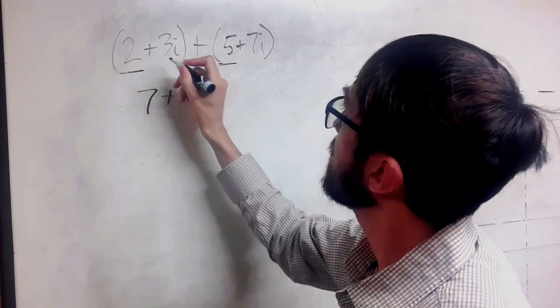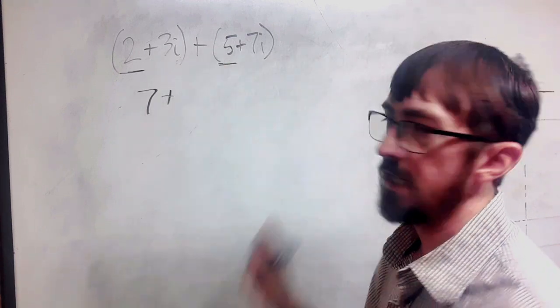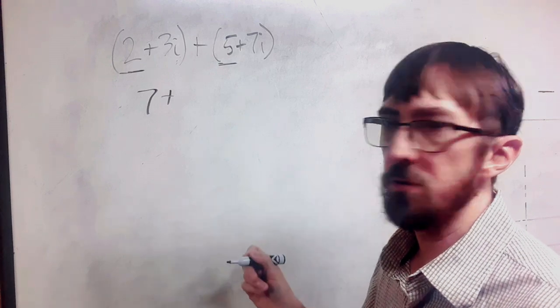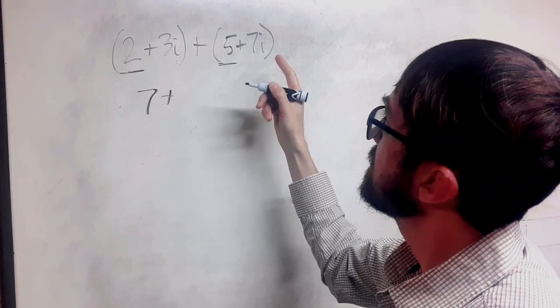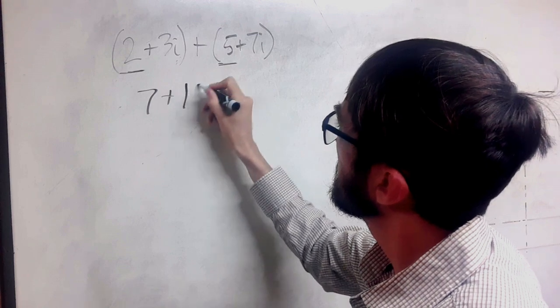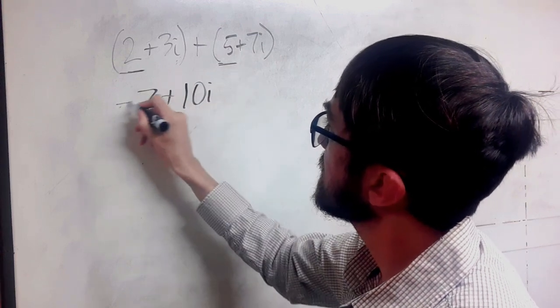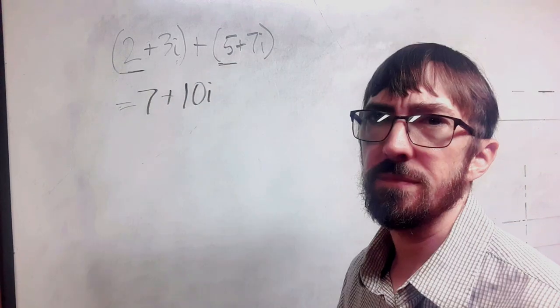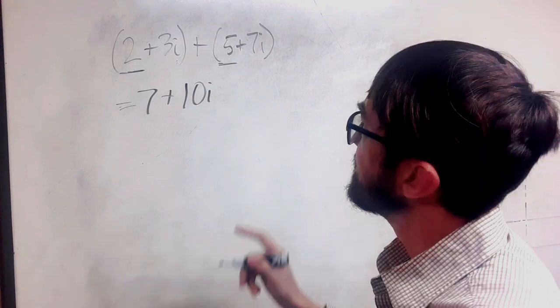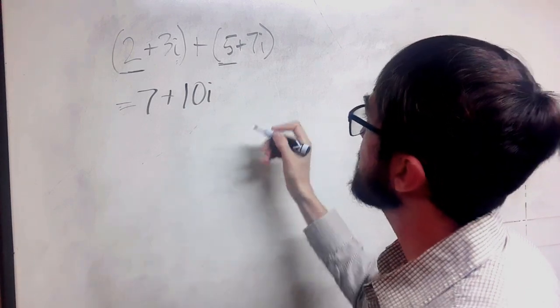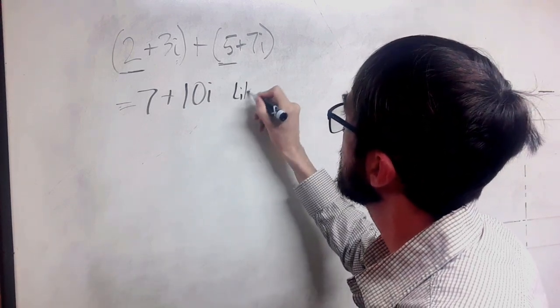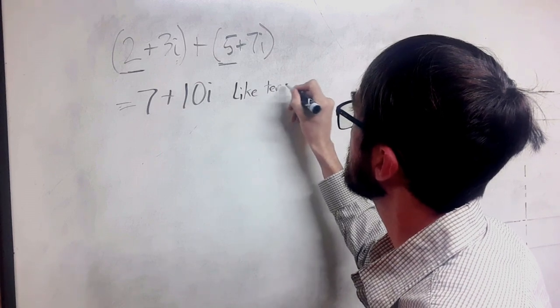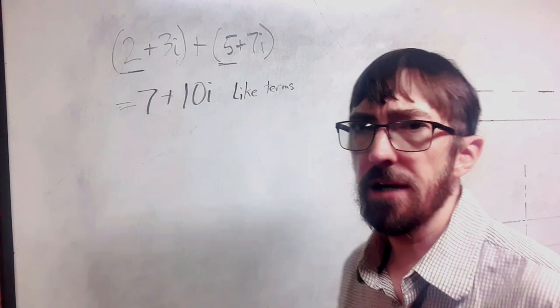We're going to add those together to get 7. And then the 3 and the 7 have an i attached to them. We're going to add those together. So this is going to be our sum. So for this, we're just doing like terms, just like in Algebra 1.